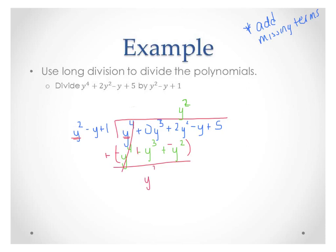0y cubed plus y cubed is y cubed. Plus y squared — 2 minus 1 is 1. Bring down the minus y. Then ask yourself: y squared times what is y cubed? The answer is y. So we write plus y, then multiply y times all three terms out front, giving us y cubed minus y squared plus y.